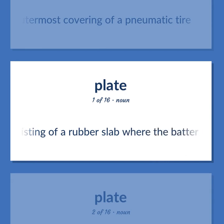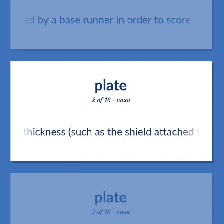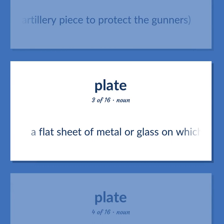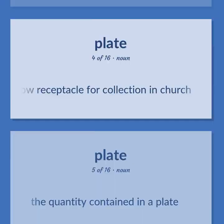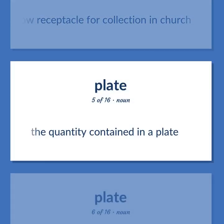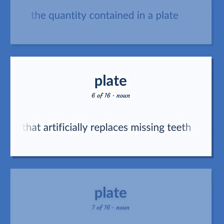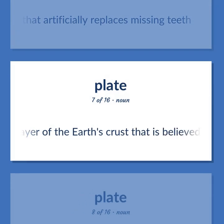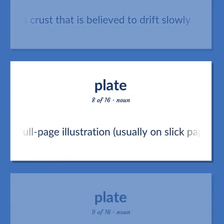Baseball: base consisting of a rubber slab where the batter stands; it must be touched by a base runner in order to score. A metal sheathing of uniform thickness, such as the shield attached to an artillery piece to protect the gunners. A flat sheet of metal or glass on which a photographic image can be recorded. A shallow receptacle for collection in church. The quantity contained in a plate. A dental appliance that artificially replaces missing teeth. A rigid layer of the earth's crust that is believed to drift slowly. A full-page illustration, usually on slick paper.